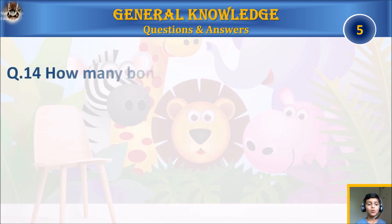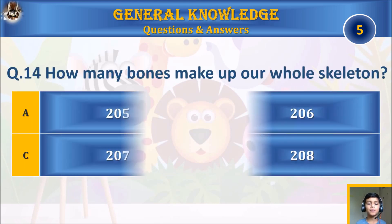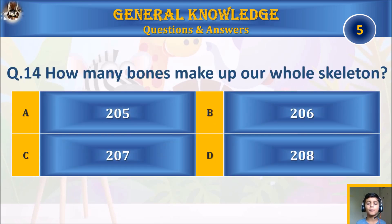Question fourteen: how many bones make up our whole skeleton? A) 205, B) 206, C) 207, or D) 208? Your time starts. The answer is B) 206.